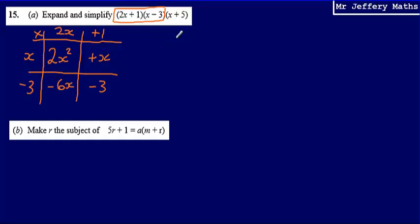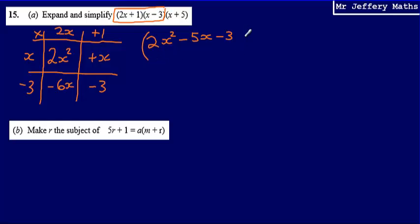So collecting this together, that's going to give me 2x squared. And then I've got plus x minus 6x, so that's going to give me minus 5x, minus 3. So I've multiplied (2x + 1) and (x - 3) together, and it's given me 2x squared minus 5x minus 3.